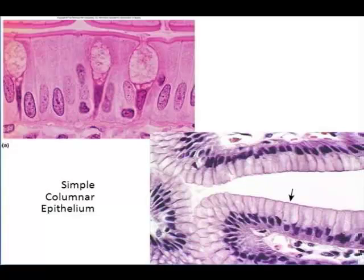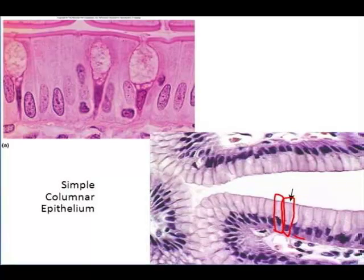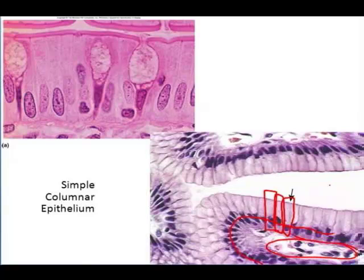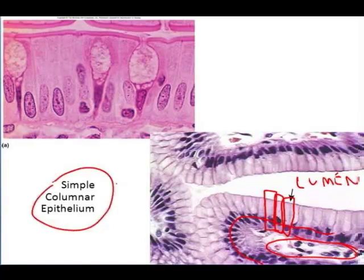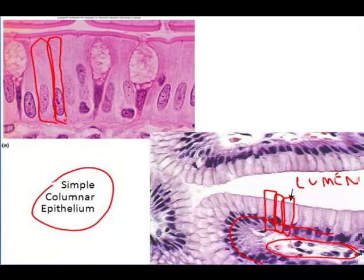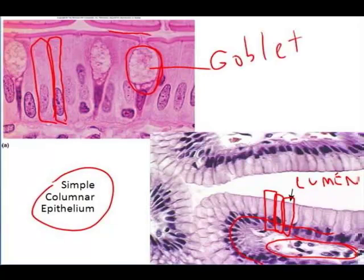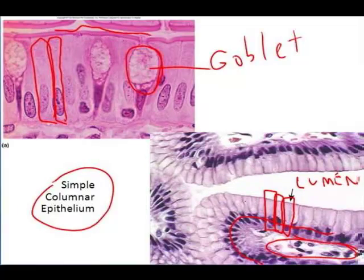In the next image, we can see a single layer of columnar cells. Look how long each of these cells is — they are column-shaped. They've got a single layer of nuclei that you can follow, and connective tissue underneath, so it is one layer of epithelium. Here's a lumen, and here is the layer of epithelium lining it. This is simple columnar epithelium. These big modified columnar cells are goblet cells, and they produce mucus and release it into the lumen. There's also a layer of microvilli on the surface to increase the surface area. This is simple columnar epithelium from the digestive tract.